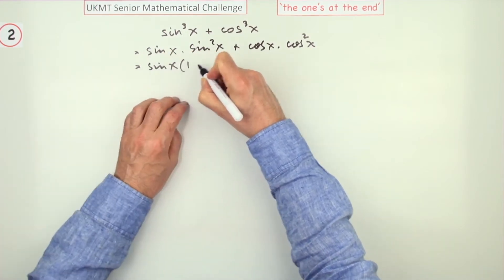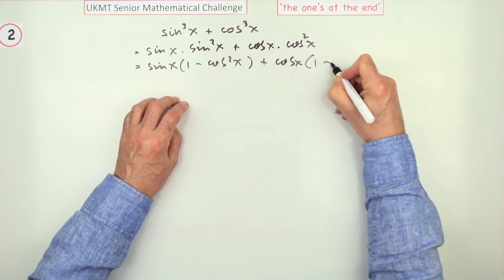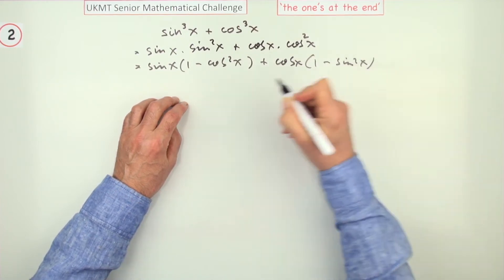I'll need to put this down. So 1 minus cos squared x plus cos x times 1 minus sine squared x.